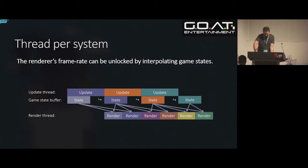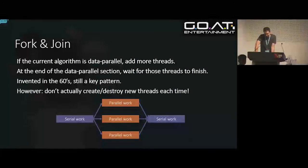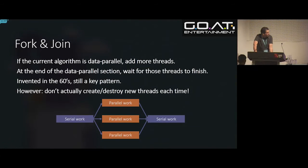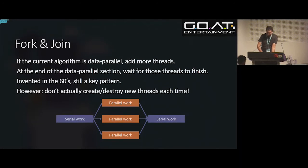That's the thread-per-system model of threading. The other thing we learned in school was fork-and-join, invented back in the 60s, still a key part of programming. The reason it was bullshit is the way we did it in school: we spawned a new thread whenever we had parallel work — say a thousand independent objects, so we'd launch three threads to do 333 each, then wait for them to die and do more serial work. We really don't want to be doing that.